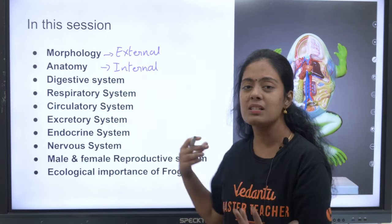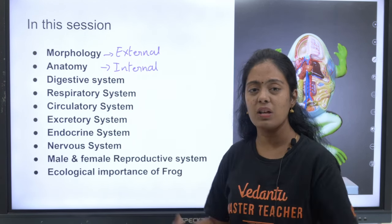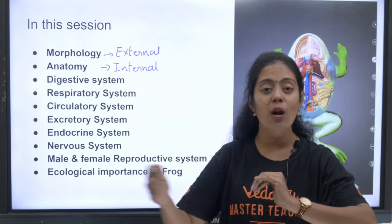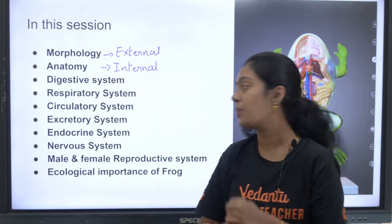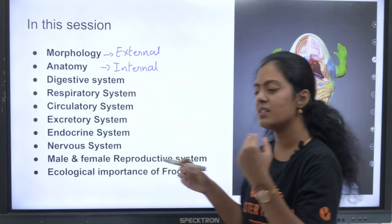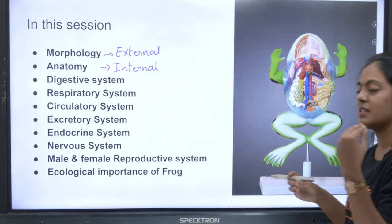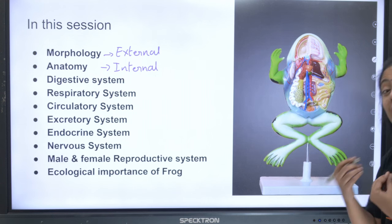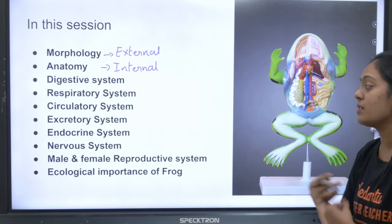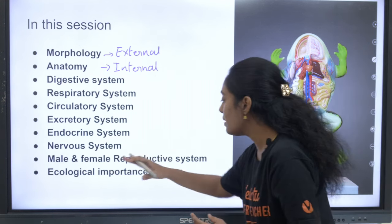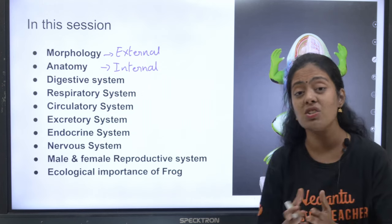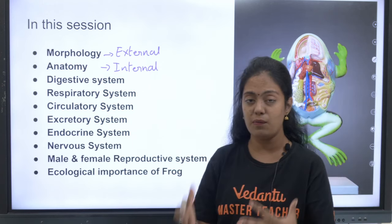The frog is a chordate with all evolved organ systems: digestive system, respiratory system, circulatory system, excretory system, endocrine system, neural system, male and female reproductive system, and we will also cover the ecological importance of frog.